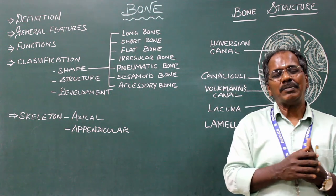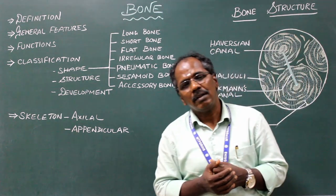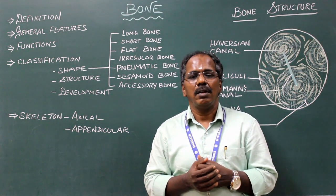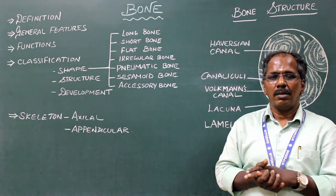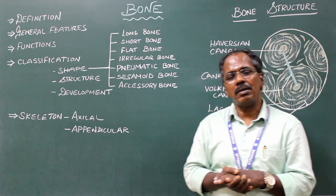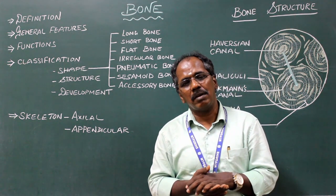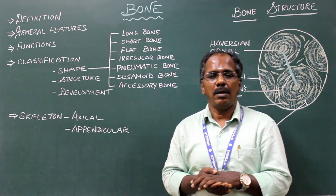According to development, bones may be classified into membranous bone and cartilaginous bone. Membranous bone, for example: skull bones, frontal, parietal, occipital.